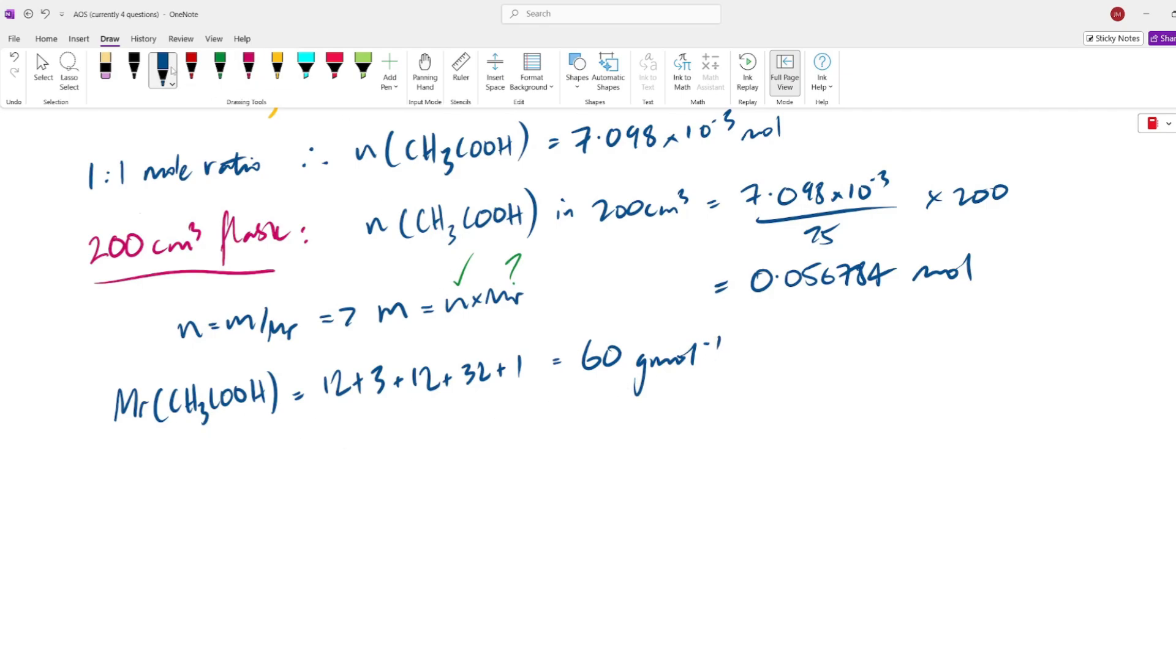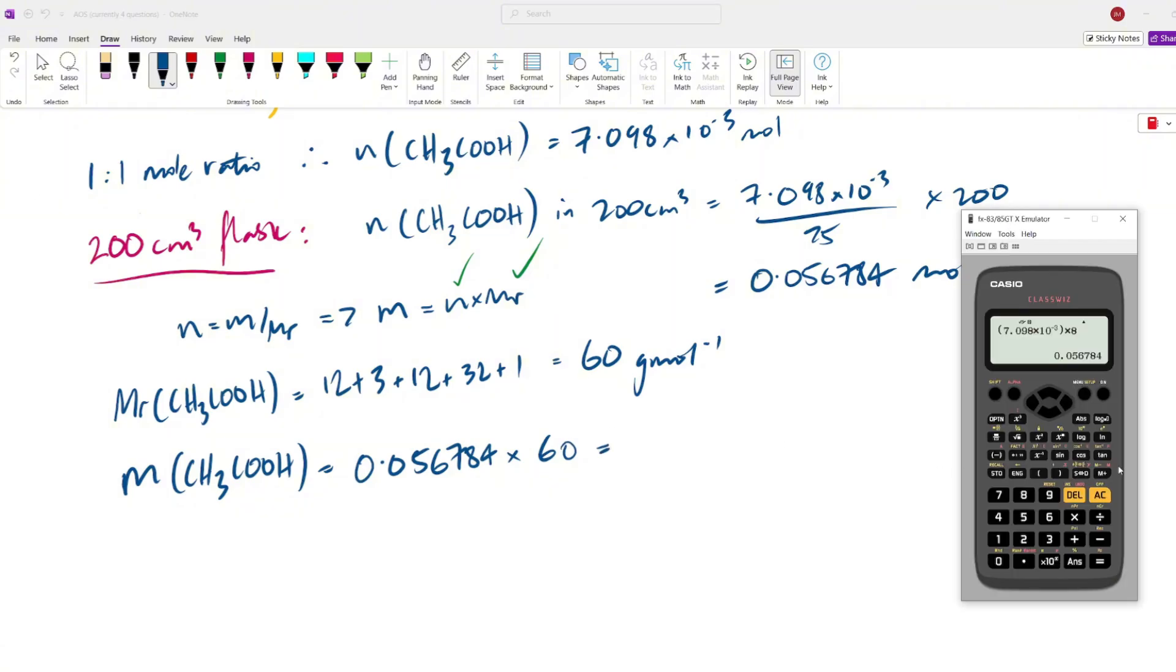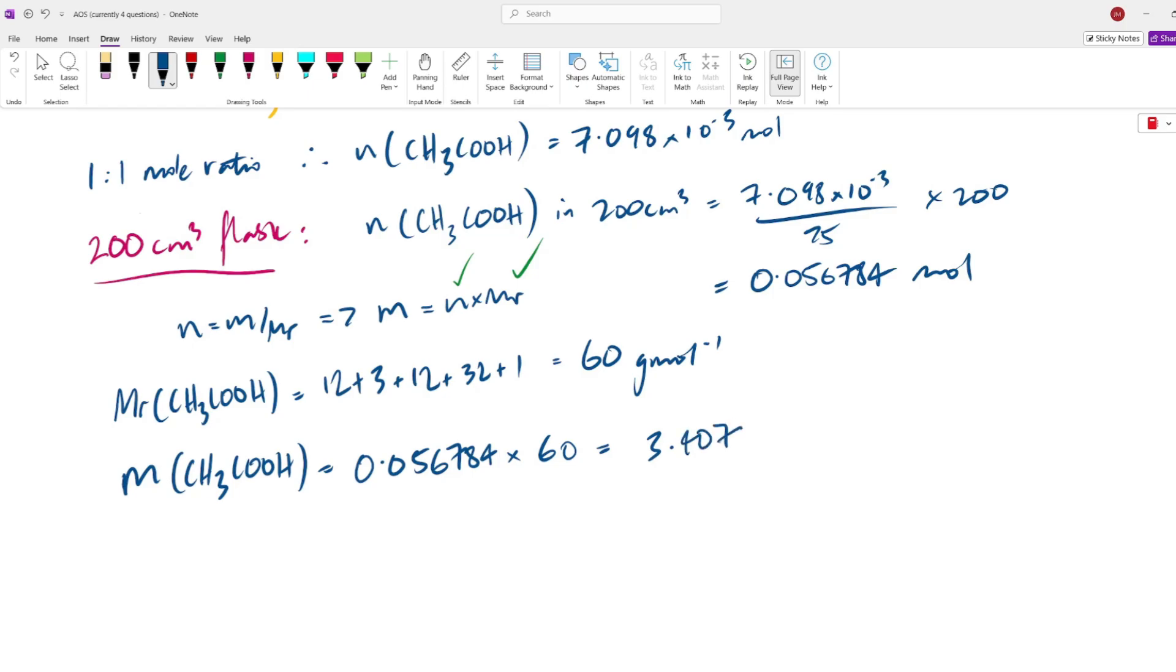All right, cool. So, we worked out Mr. We now have this variable right here that we had a question mark on previously. Rub that out. So, we can just carry out this equation right here in your calculator. So, the mass, let's write the actual specific species that we're looking at. The ethanoic acid equals our moles of the 200 centimeter cubed, which is 0.08112 multiplied by 60. That is going to give us our mass. So, let's do that in the calculator. 0.08112 times 60 equals 4.8672. And that is grams. That is our mass.